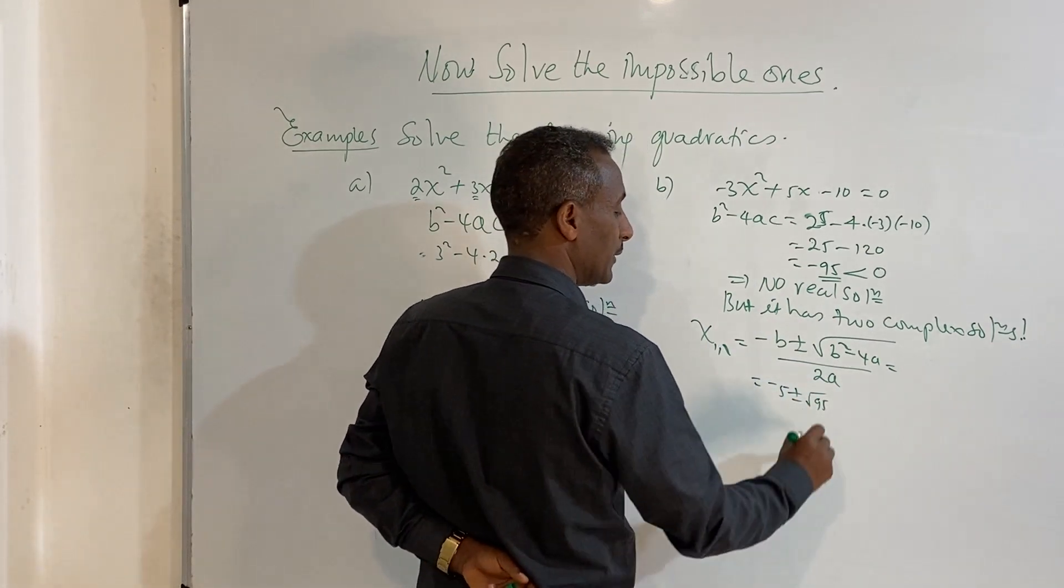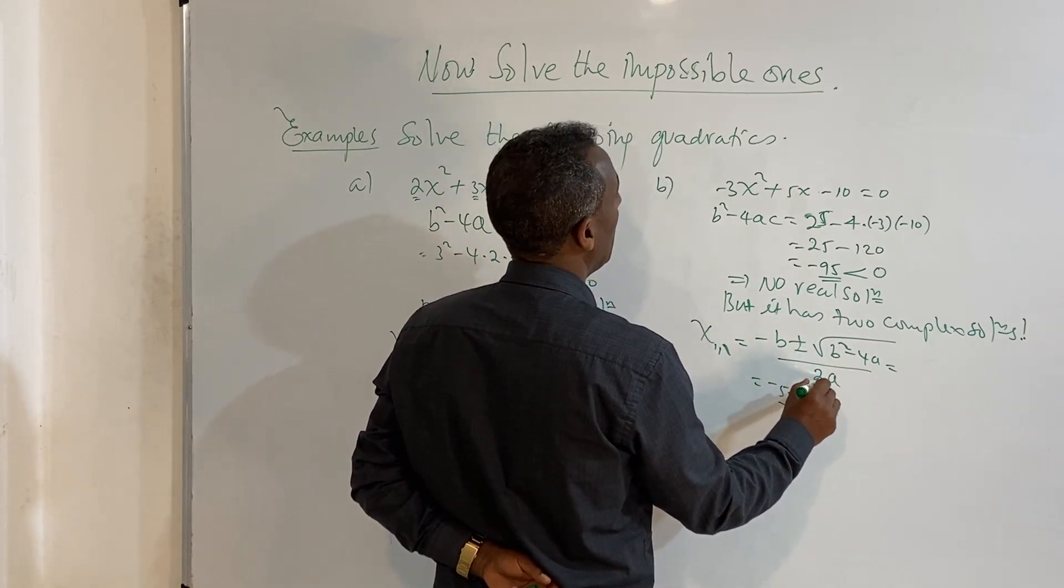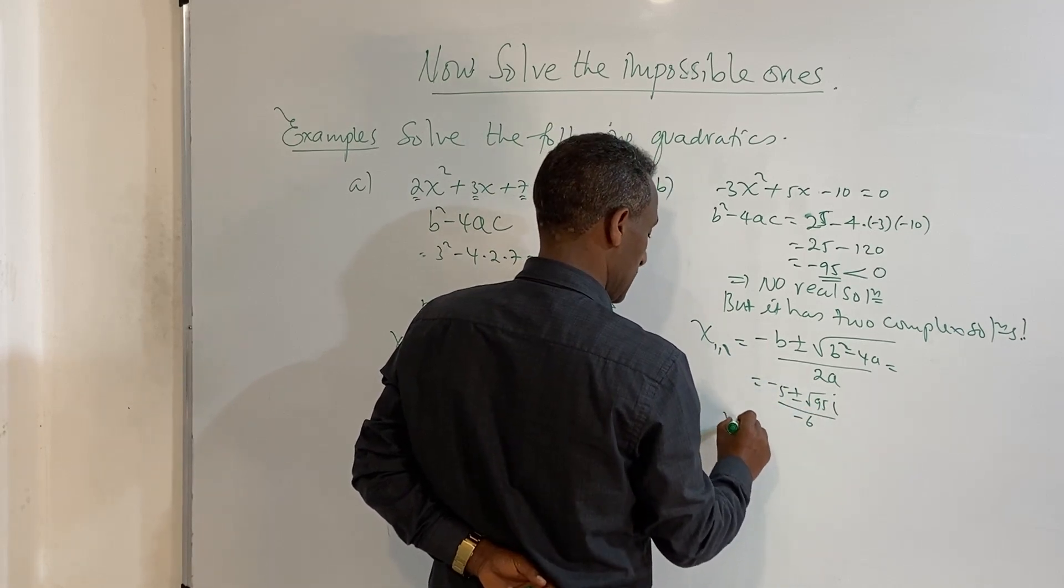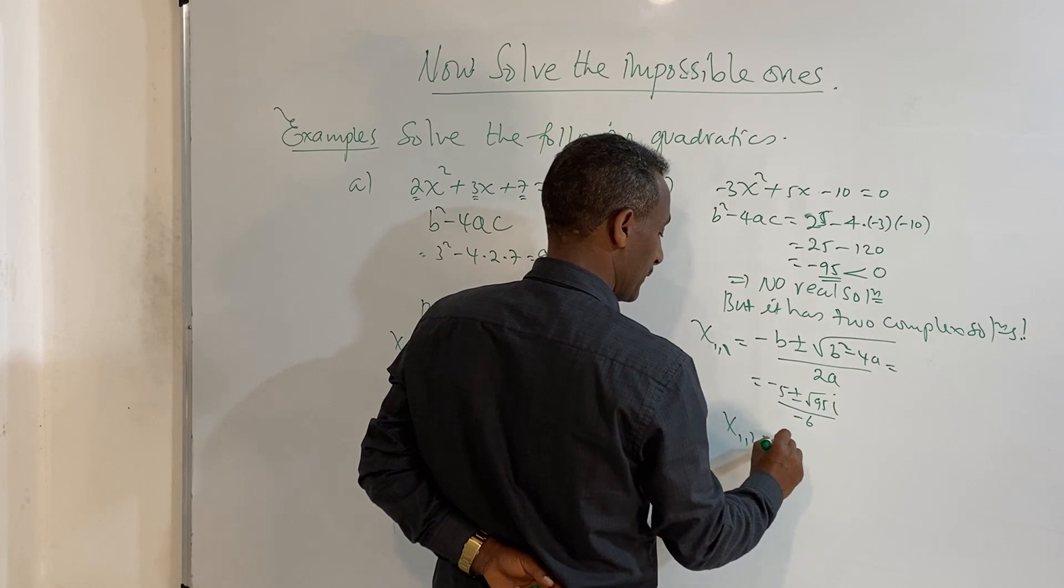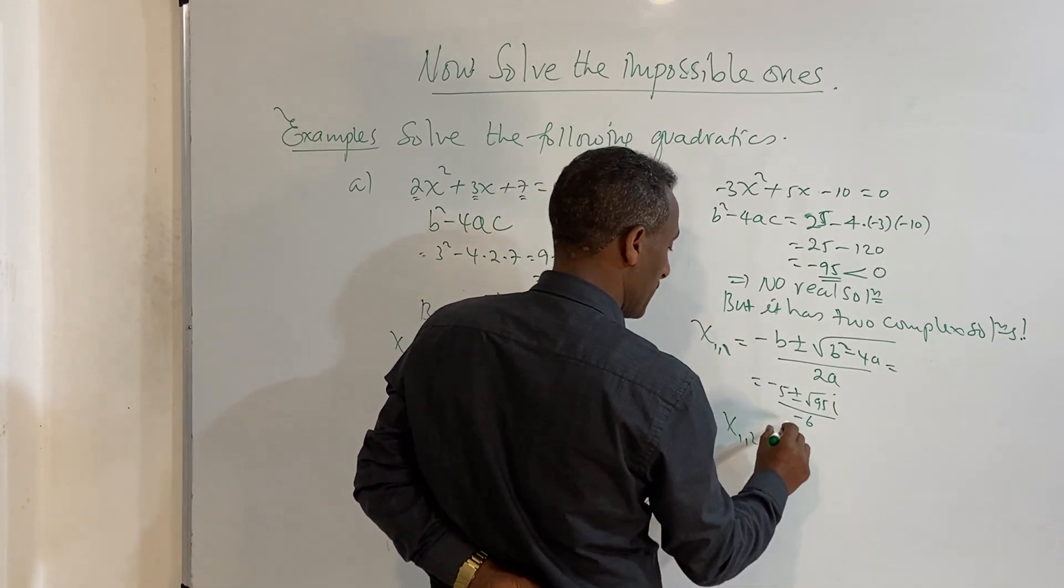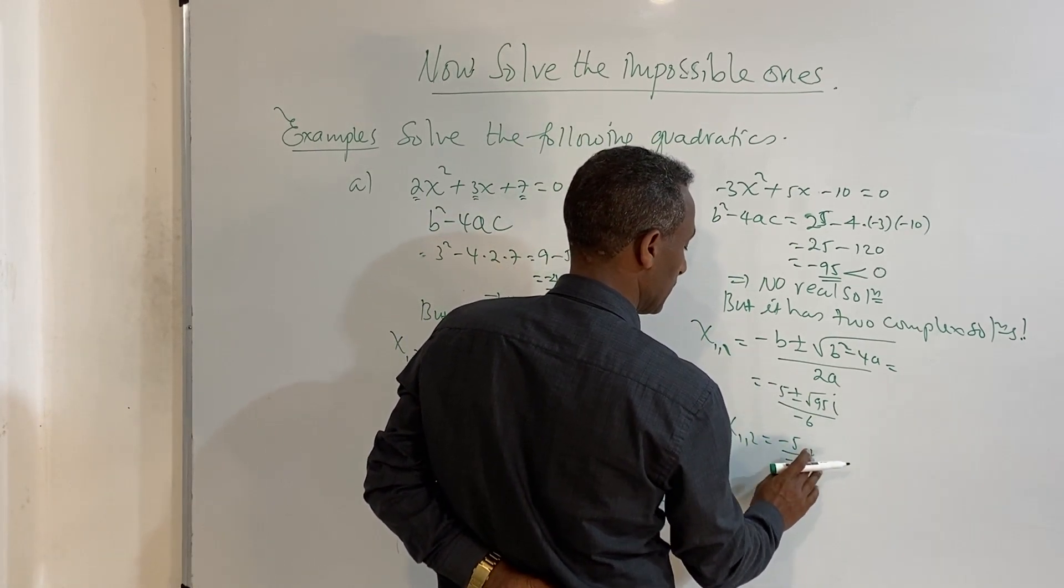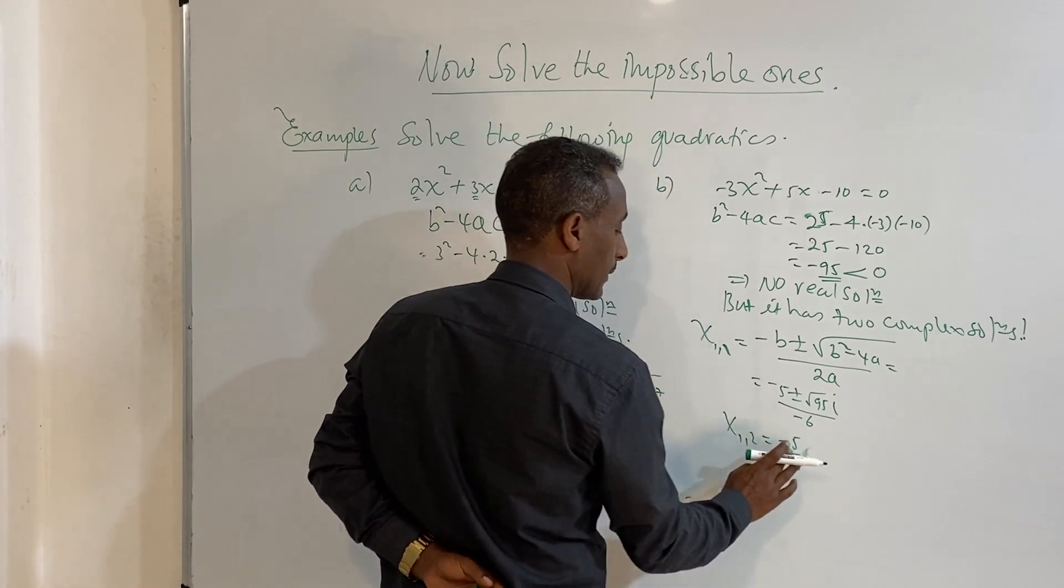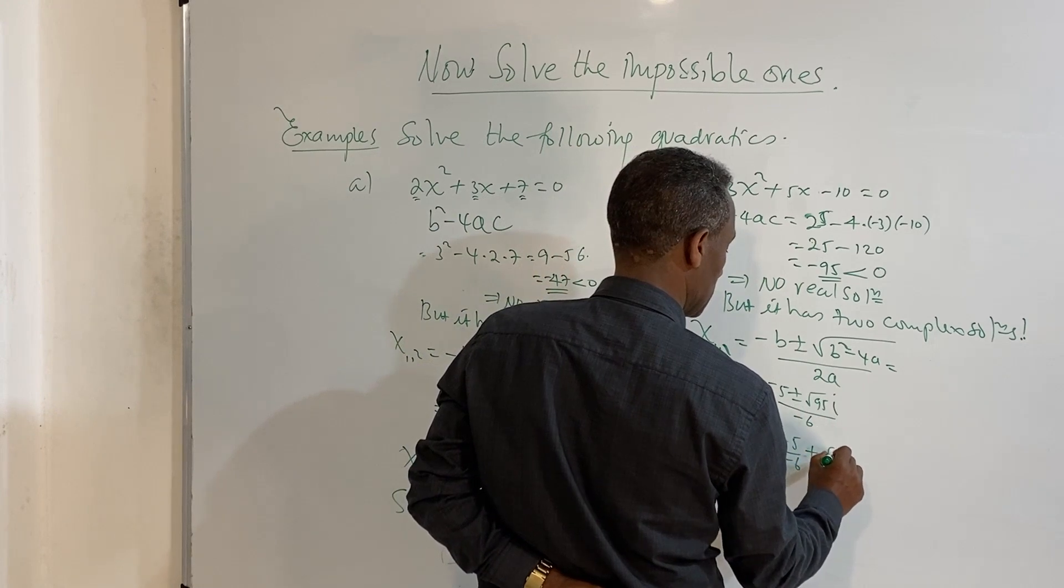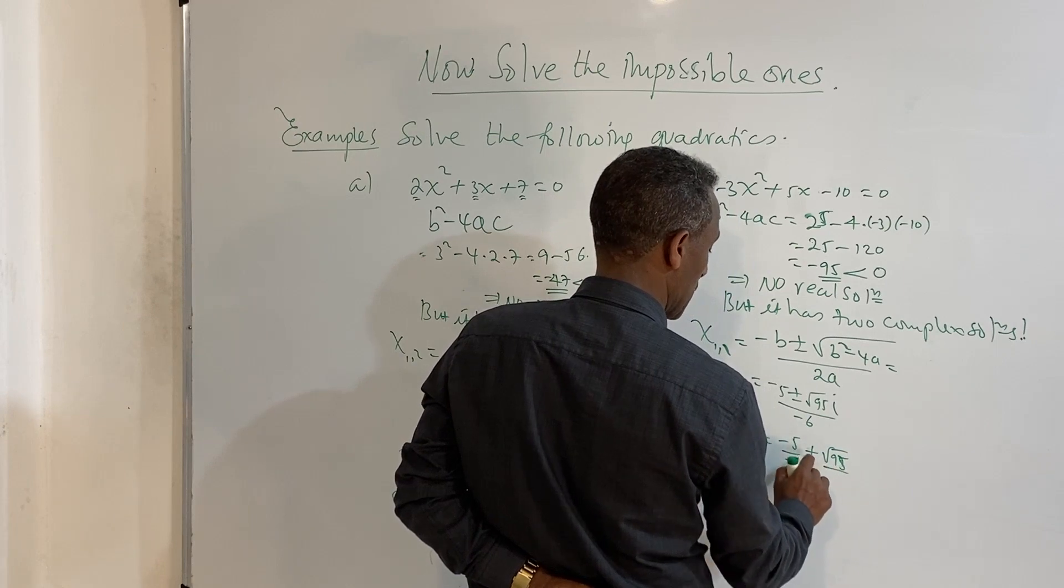Which means minus b is minus 5, so plus 5, plus or minus square root of negative 95. A is negative 3, so over 2a is over negative 6.